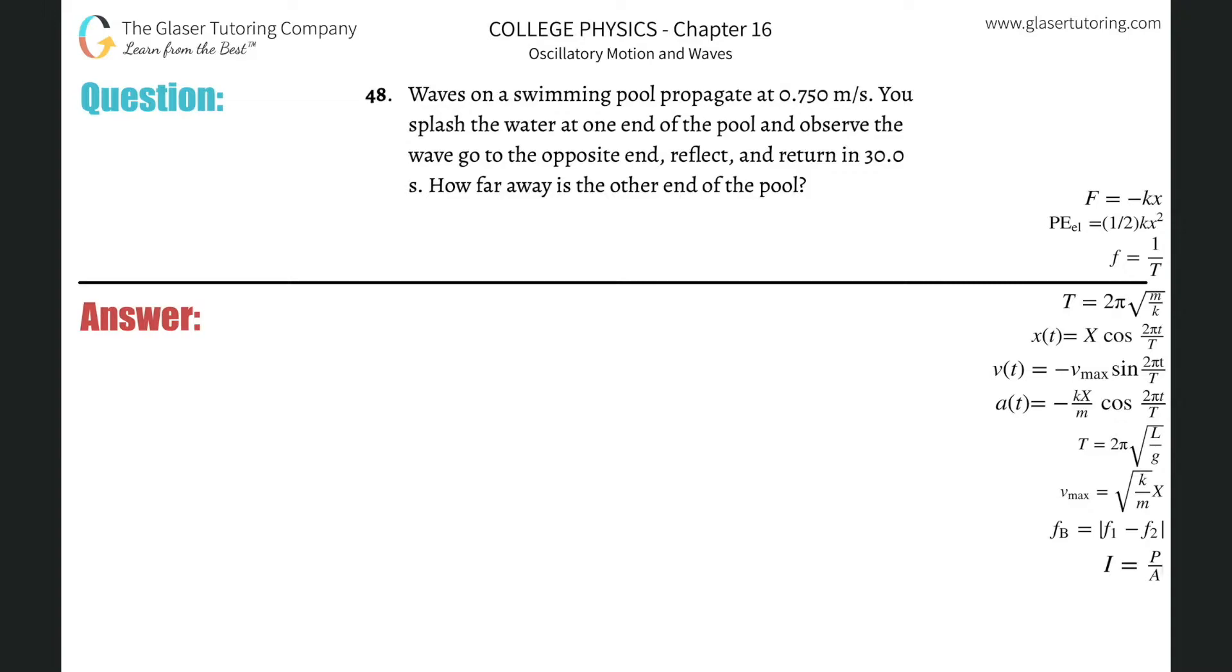48. Waves on a swimming pool propagate at 0.75 meters per second. You splash the water at one end of the pool and observe the wave go to the opposite end, reflect, and return in 30 seconds. How far away is the other end of the pool?